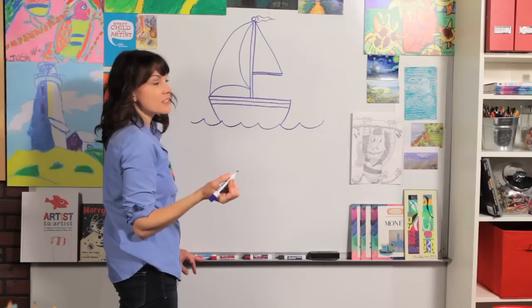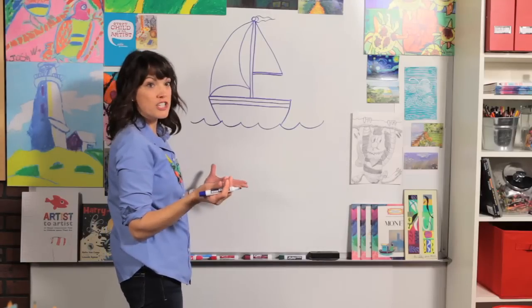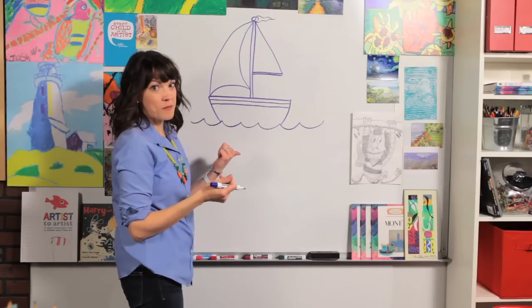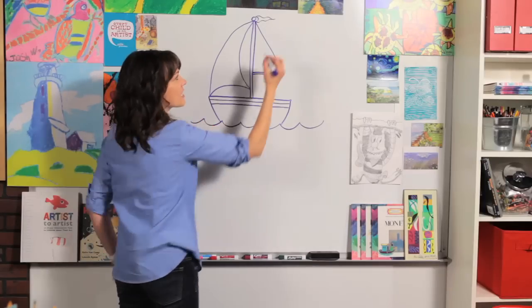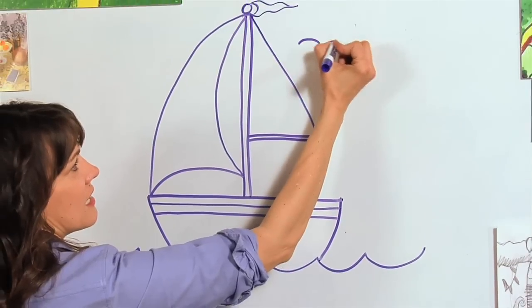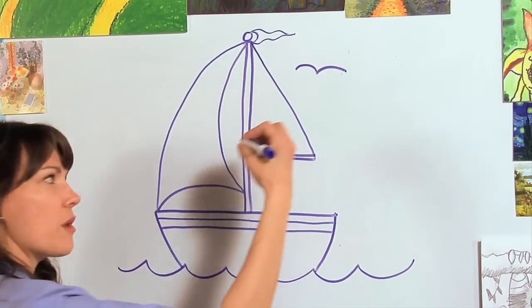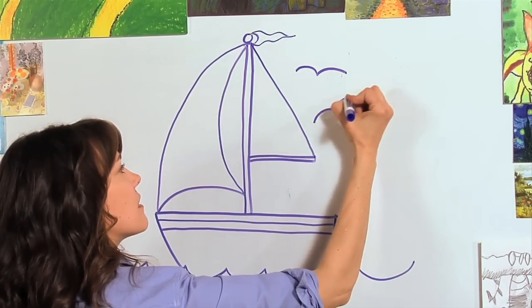And we can put some seagulls in the sky. There's always seagulls on the ocean or where I sailed on the Great Salt Lake, there was a lot of seagulls. And they're really easy, two curved lines. One, two. And then just turn it the other way next time. One, two.